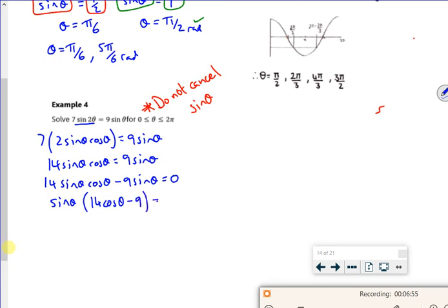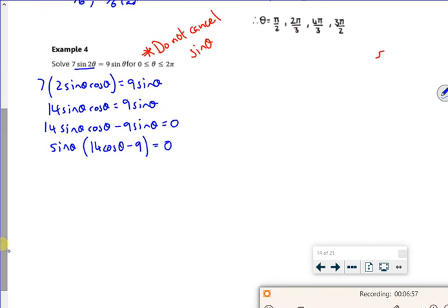So a lot of people will just divide the sin theta out. But what I do is I lose all my values for sin theta is 0. I don't want to lose those values for sin theta is 0. Take my 9 over and divide 3 by 14. There. So what have we got? Are we still in radians? Yeah. Check that. So we're still in radians.